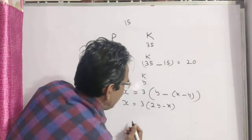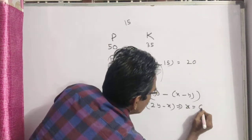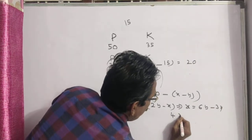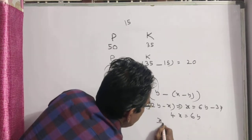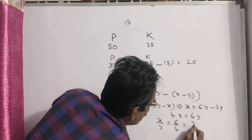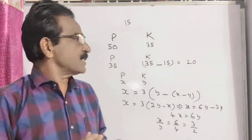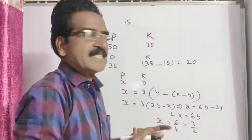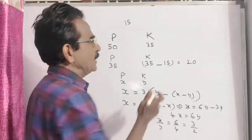This implies X equals 6Y minus 3X, which again implies 4X equals 6Y. That is, X by Y equals 6 by 4, which equals 3 by 2. Now we have the ratio of the ages of Parag and Kalyan. We know the sum of the ages, so let us divide the sum in the ratio 3 is to 2 to get the ages of Parag and Kalyan.